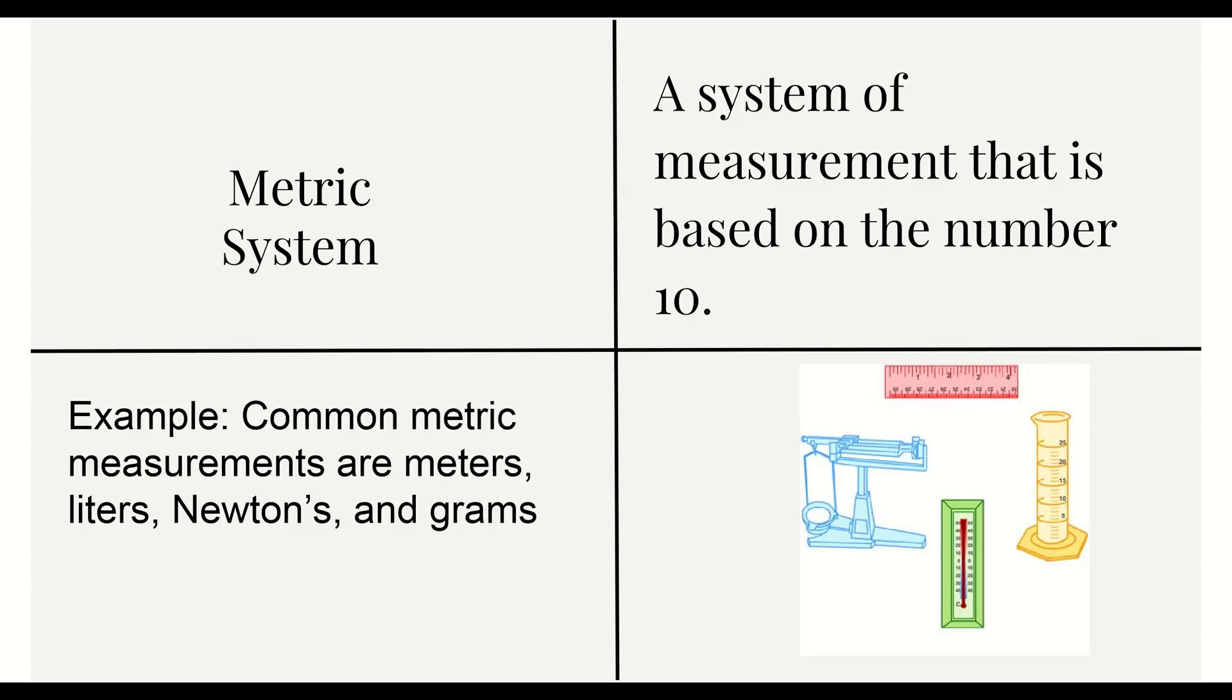The first word that we're going to talk about is the metric system. The metric system is a system of measurement that is based on the number 10. When you say based on the number 10, that means as we go up different units we move the decimal place either left or right, just like if you multiply something by 10 the decimal place will move to the right and if you divide by 10 it will move to the left.